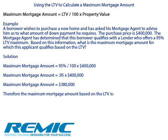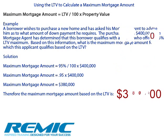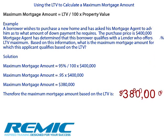When using the Loan-to-Value to calculate a maximum mortgage amount, the mortgage agent needs to know the Loan-to-Value offered by the lender as well as the value of the property. The maximum mortgage amount equals the Loan-to-Value divided by 100, multiplied by the Property Value. For example, a borrower wishes to purchase a new home and has asked you to advise him on the down payment required. The purchase price is $400,000 and the borrower qualifies with a lender who offers a 95% Loan-to-Value maximum. The maximum mortgage amount equals 95 divided by 100 multiplied by $400,000, which equals 0.95 times $400,000, giving a maximum mortgage amount of $380,000. Based on this, the client would need at least $20,000 as a down payment.